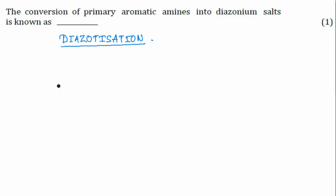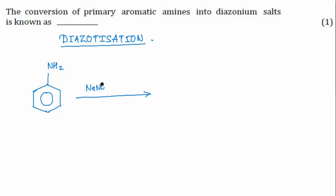The chemical reaction involved: take aniline as your primary aromatic amine. The reagents on the arrow are NaNO2 plus HCl. Temperature is very important — for diazotization, always remember to mention the temperature, which is 0 to 5 degrees Celsius.